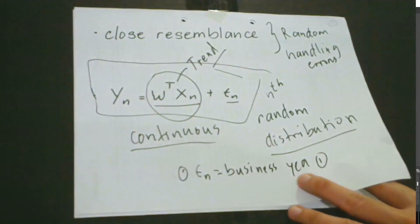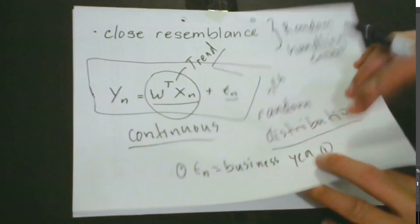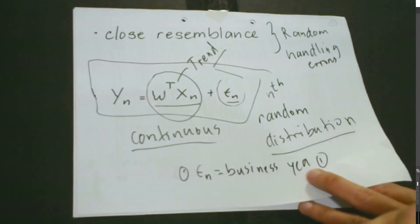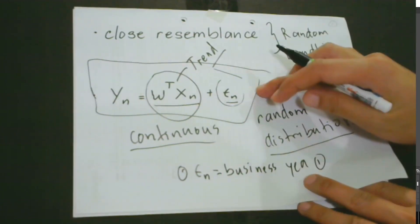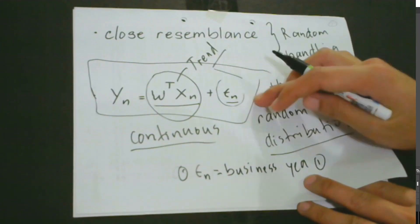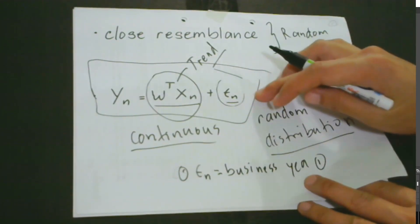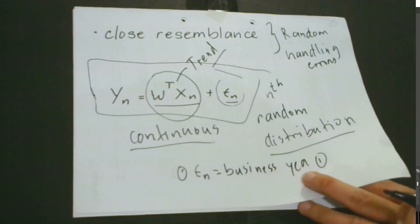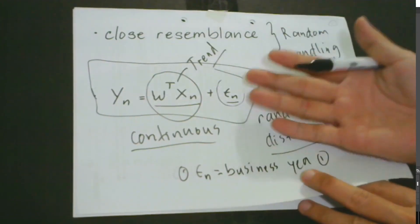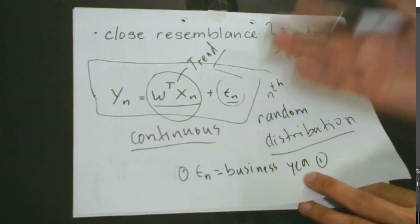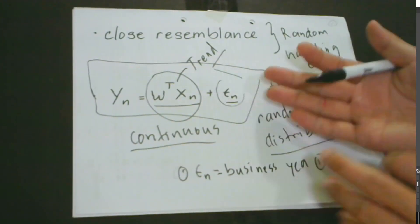And then, we have the second part, which is this one, and we have already said that this is the random component, and this is actually the noise, if you could still remember. And we have to always remember that we are not restricted to noise from a Gaussian distribution.